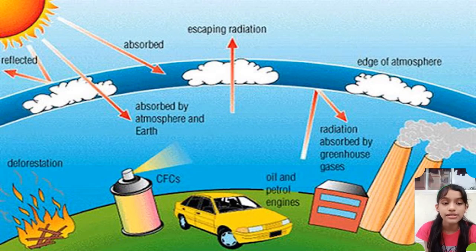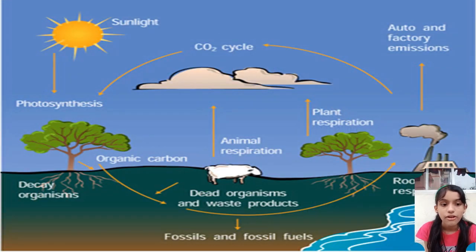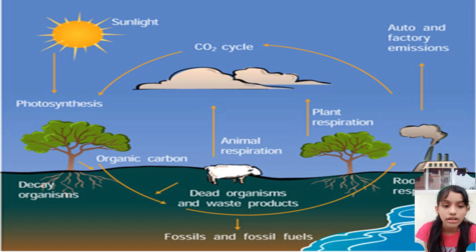Carbon dioxide is released when we use fossil fuels such as coal, oil, and natural gas. We burn these fuels, made from the ancient remains of plants and animals, to generate electricity and to run engines using fuels such as gasoline and diesel, which power cars, airplanes, and ships.